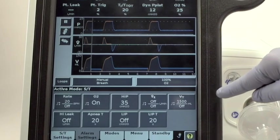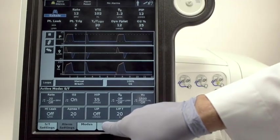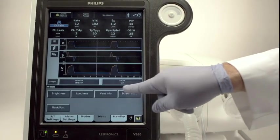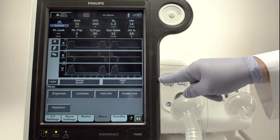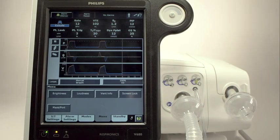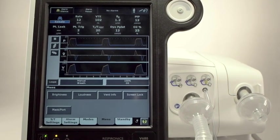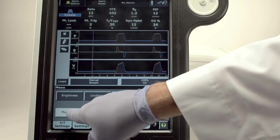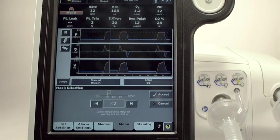The Menu tab allows you to adjust screen brightness, alarm volume, access ventilator information, or lock the screen from access by unauthorized individuals. If you are practicing mask rotation to help prevent skin breakdown, you can easily change the leak value of the new mask from the menu screen.